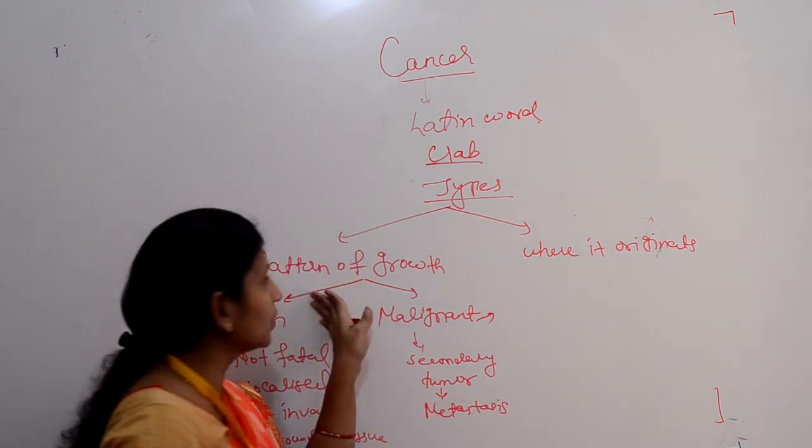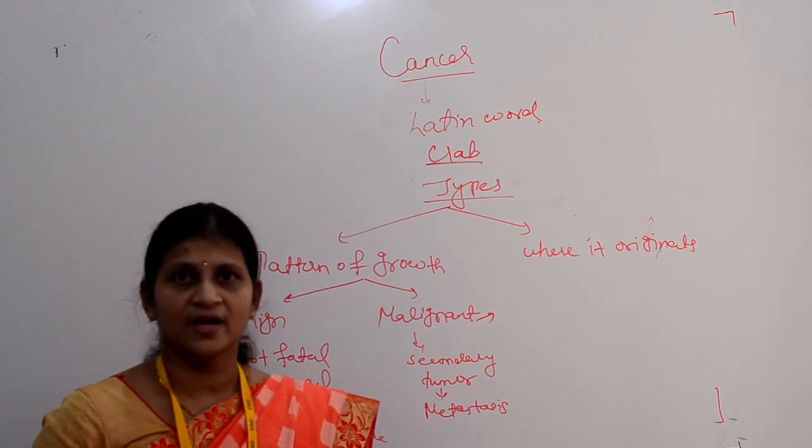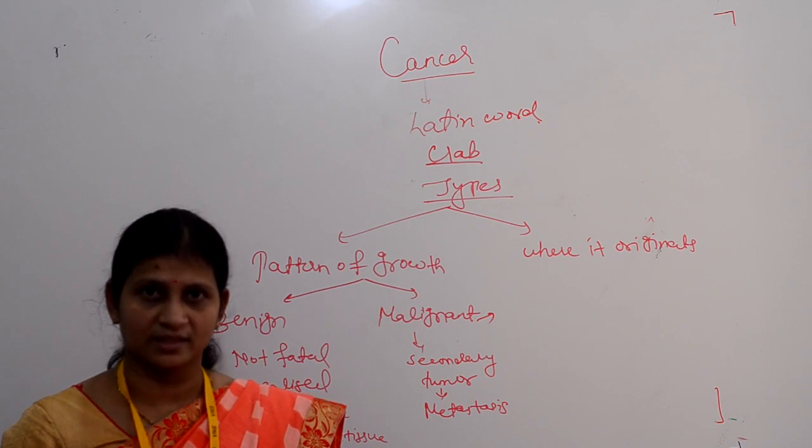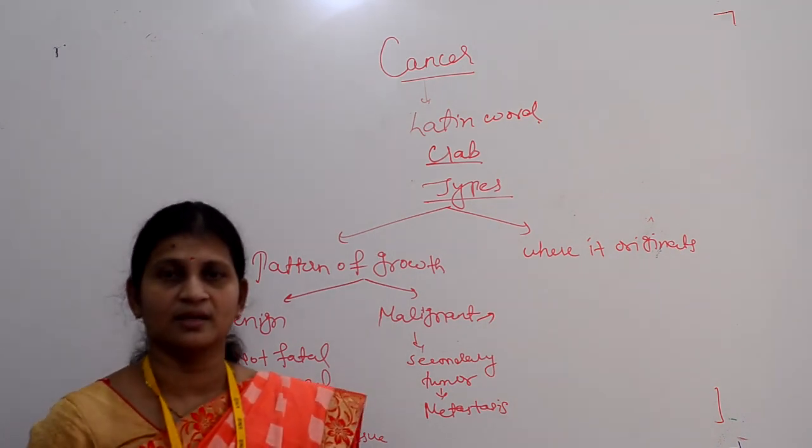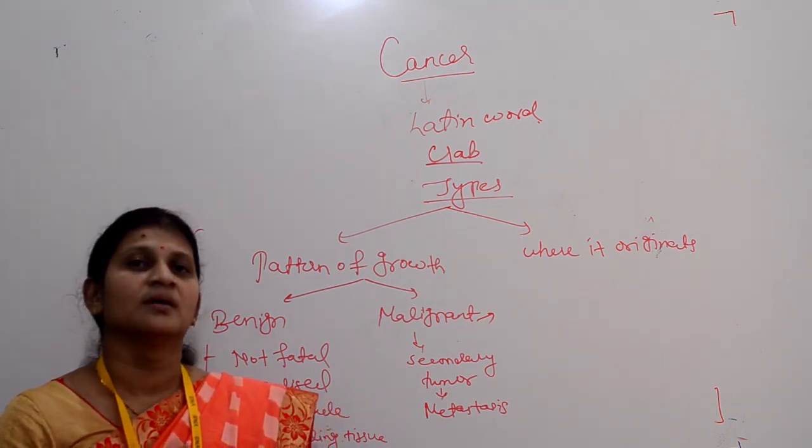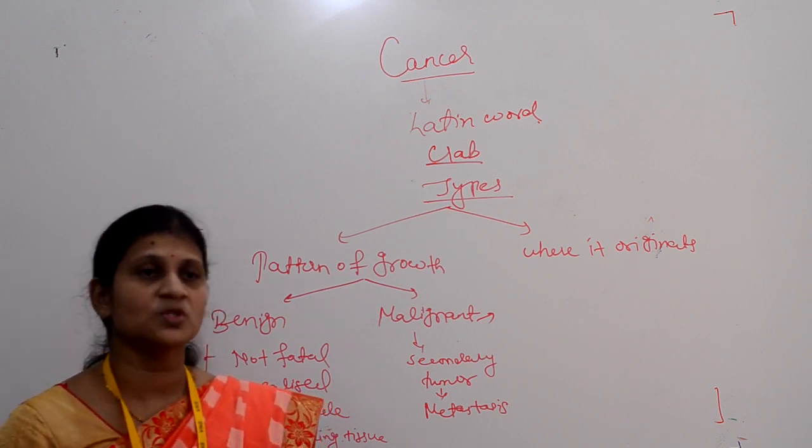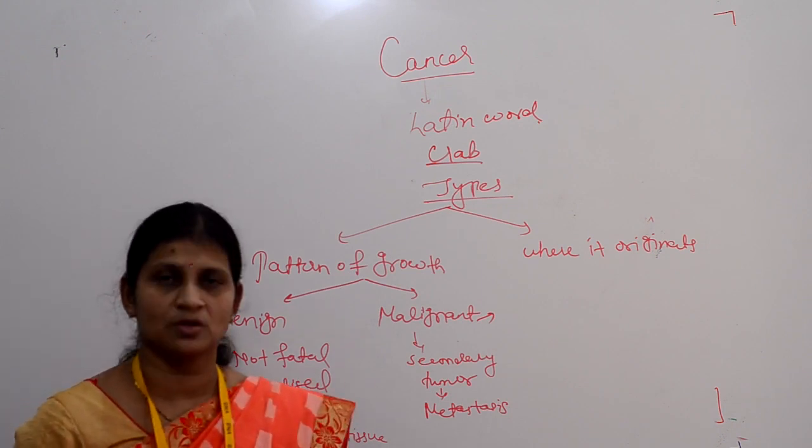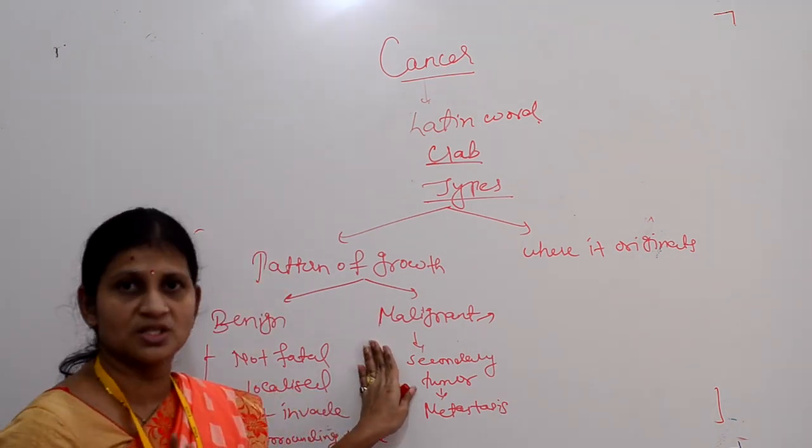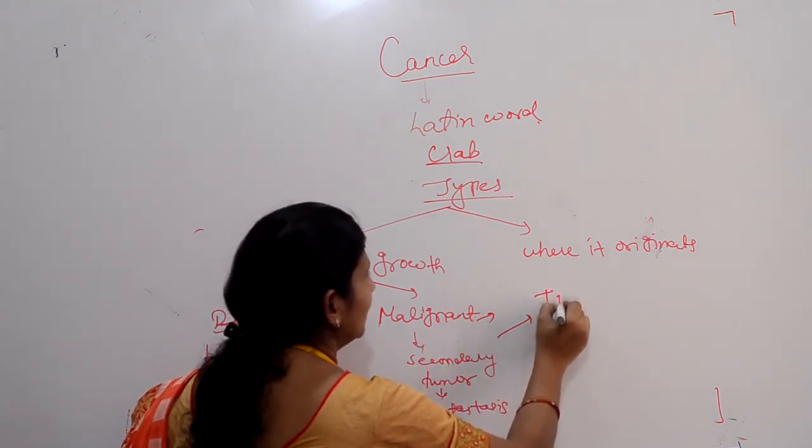When we talk about pattern of growth, physicians mainly identify the type of cancer using various techniques like imaging techniques, for example MRI, CT scan, then endoscopy. The main and important test used for diagnosis and confirmation of cancer is biopsy. There are two staging systems for cancer: TNM staging and another based on various stages.